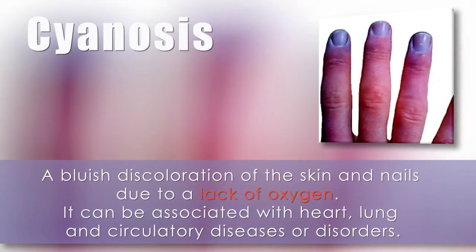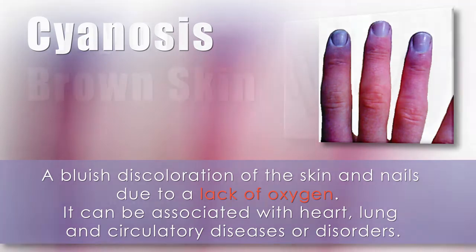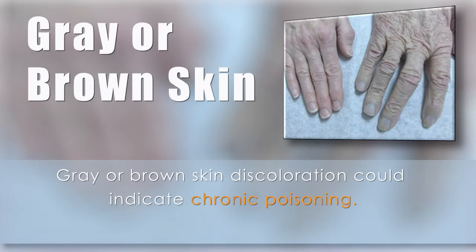Cyanosis is a blueish discoloration of the skin and nails due to lack of oxygen. It can be associated with heart, lung, and circulatory diseases or disorders. Gray or brown skin discoloration could indicate chronic poisoning.